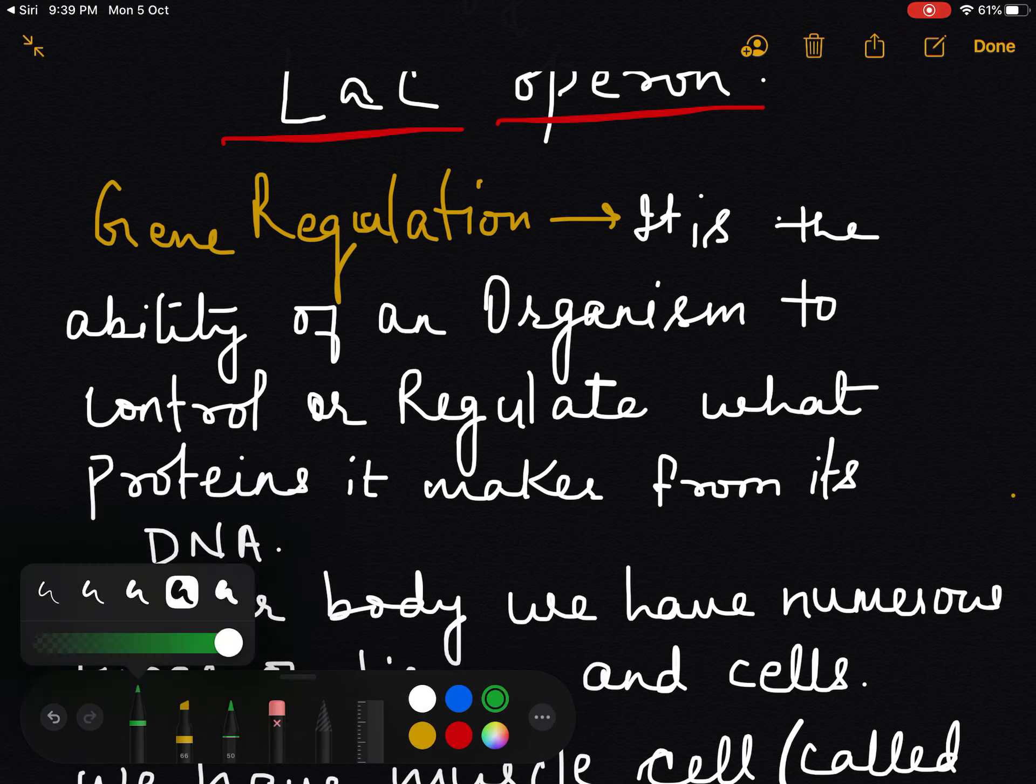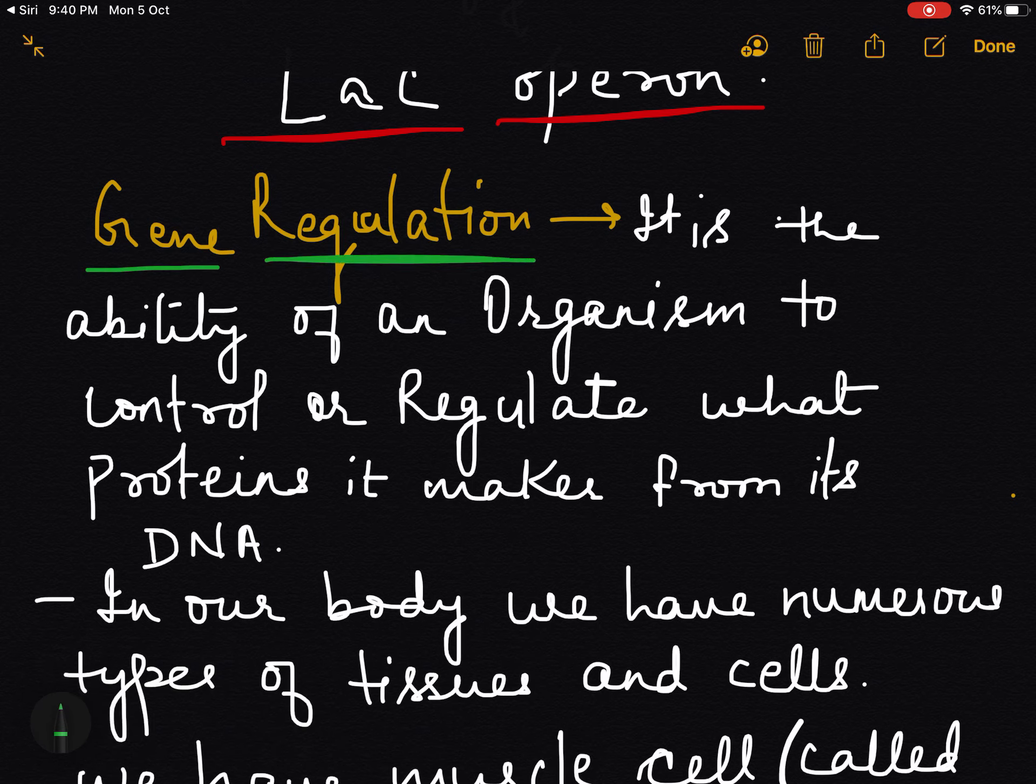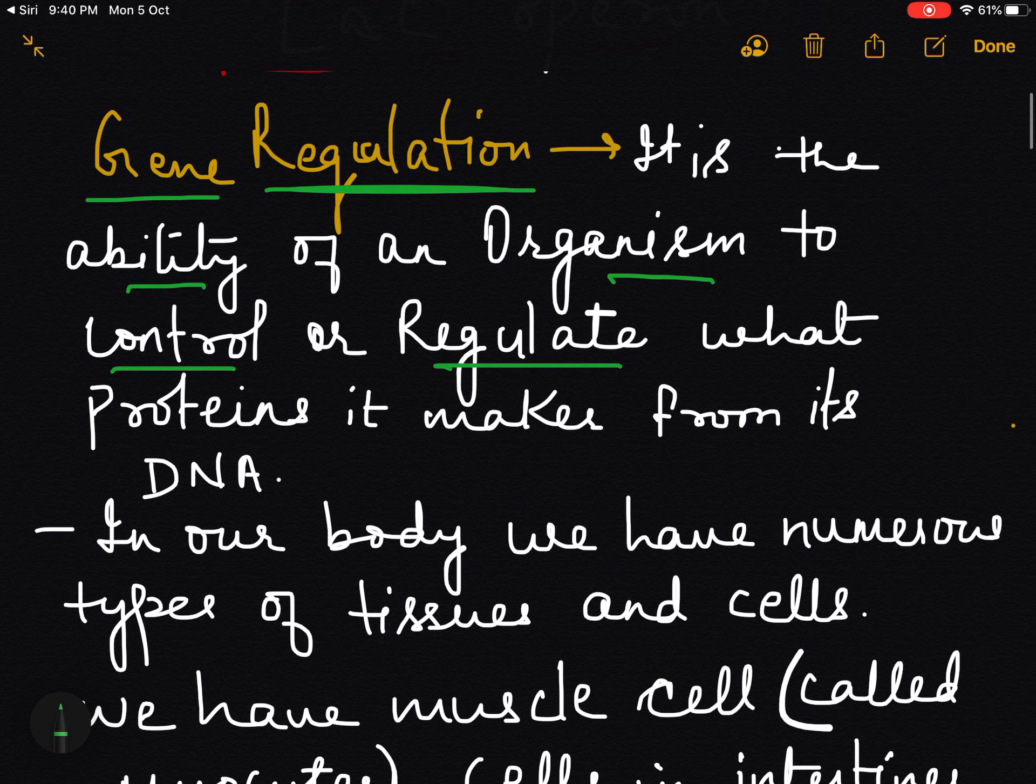Gene regulation - as you see, what is the definition? It is the ability of an organism to control or regulate what proteins it makes from its DNA. So if we combine these two words, it means the ability of an organism to control or regulate whatever proteins it makes from its DNA.